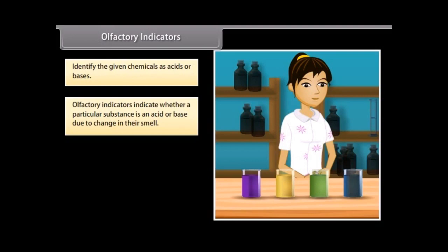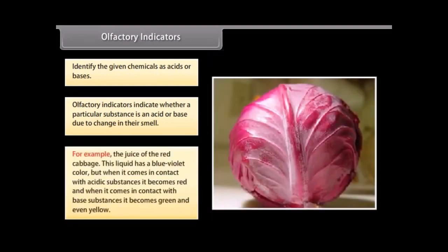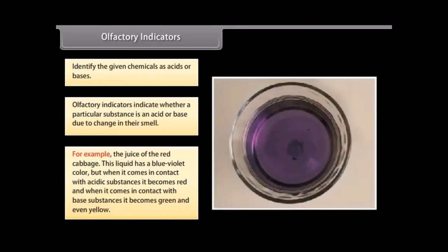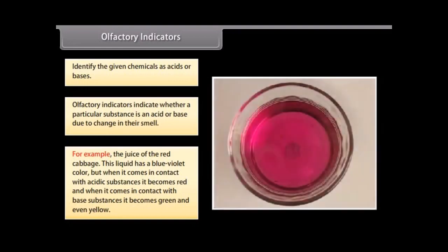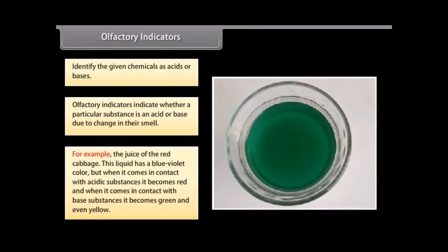An olfactory indicator works on the principle that when an acid or base is added to a substance, then its odor cannot be detected. For example, the juice of the red cabbage. This liquid has a blue-violet color, but when it comes in contact with acidic substances, it becomes red. And when it comes in contact with base substances, it becomes green and even yellow.